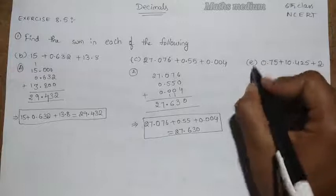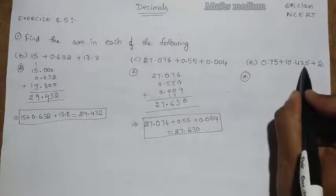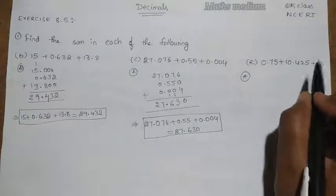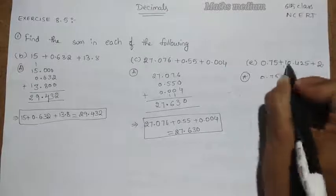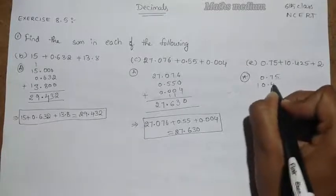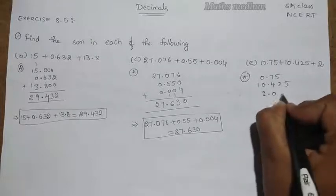Next coming here. This is also applied for the same question, but here we have up to the also 1000th value. Take it, first 0.750, here 10.425, here 2.000.